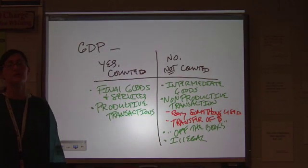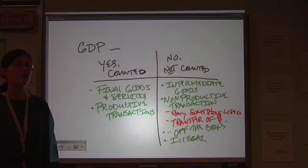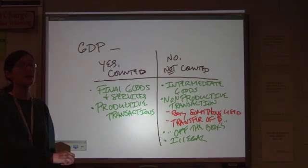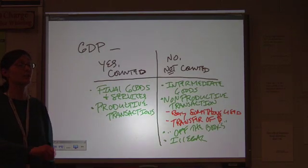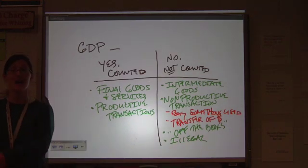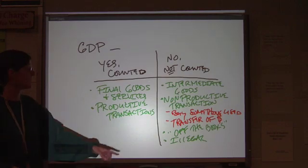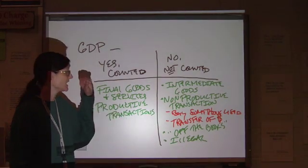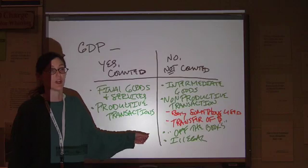Similarly, transactions that are illegal do not count in GDP. It would seem a little bit self-serving, perhaps, if we made things illegal and then added the sales of illegal drugs into our GDP. Oh, you're not supposed to do this, but hey, look at our great numbers. We cannot count that stuff. It's not reported and it's unethical for us to do that.